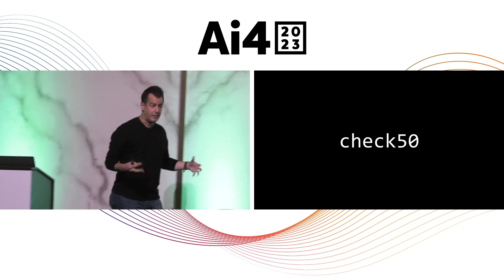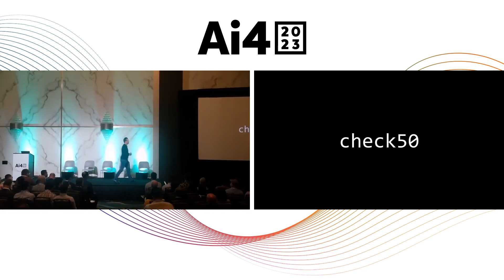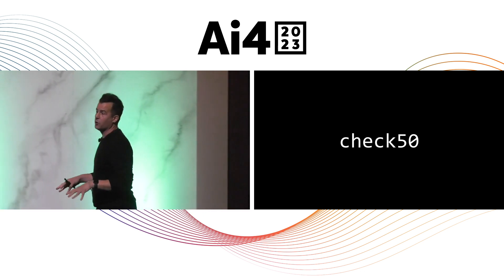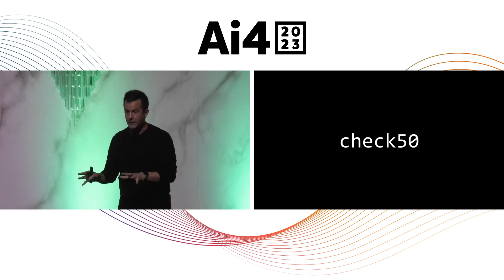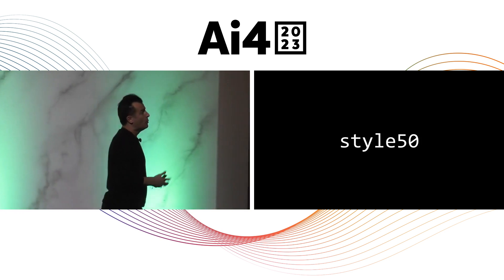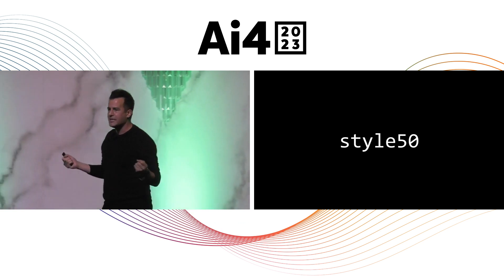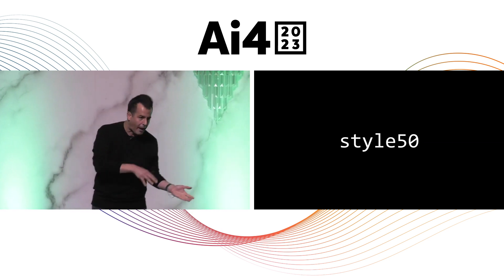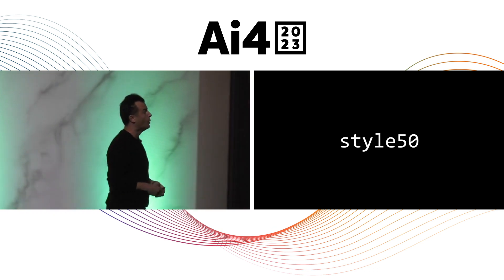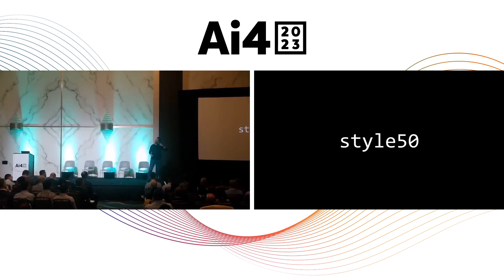Being computer scientists, we've tried to address the need for support structure through software. For years, we've given students a command line tool called Check50, which all students can use on campus and off to check the correctness of their code automatically before they submit it before the deadline. We give them a tool called Style50, which allows them to automatically assess the quality of formatting, style, and aesthetics of their code — the analog of writing an English essay and capitalizing words properly, indenting paragraphs, and so forth.